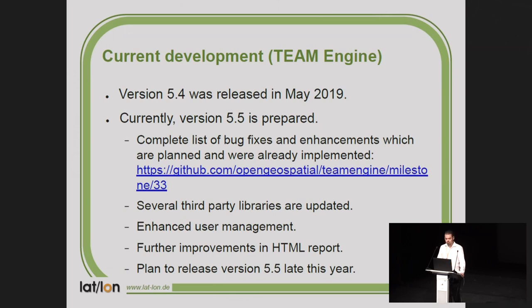Now I come to the current development of Team Engine. Version 5.4 was released in May 2019, and it's still actively developed. Currently, version 5.5 is being prepared. We have several issues tagged with the 5.5 milestone, so you can see which features will be part of it — mainly updating third-party libraries, enhancing user management, and improving the final report. The plan is to release version 5.5 late this year.